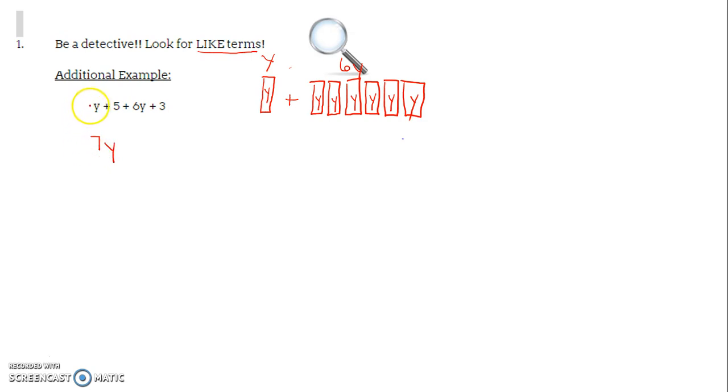Your teachers may have also talked to you about the fact that on this y, if you don't see a coefficient, a number in front of that y, we assume it's a 1 because 1 times y will not change the value. And then what your teachers probably have you do after you spend time with your algebra tiles, they probably have you do 1y plus 6y. They probably have you add your coefficients. 1 plus 6 is 7, and you keep the y.